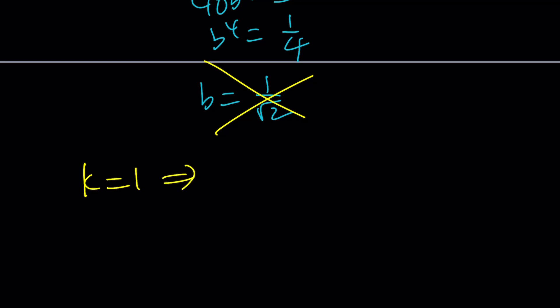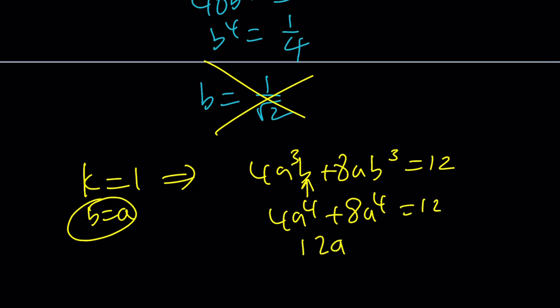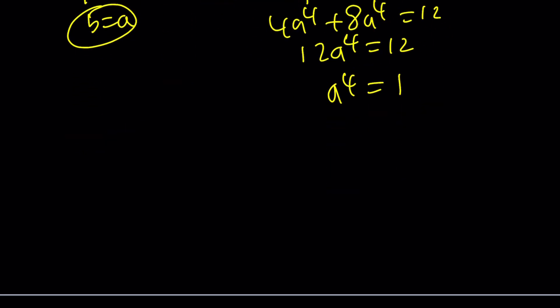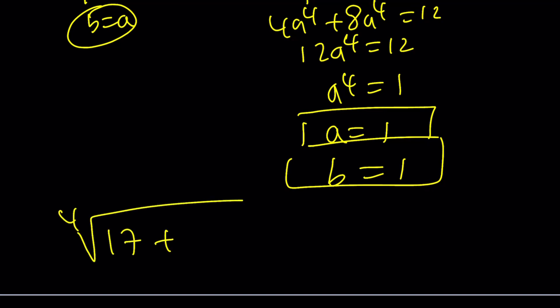If k is equal to 1, then my equation was 4a cubed b plus 8ab cubed equals 12. Replace b with a because that's what it means. So you're going to get 4a to the 4th plus 8a to the 4th equals 12, which means 12a to the 4th equals 12, which means a to the 4th equals 1. And from here, you get two solutions, but we're going to go with the positive solution, a equals 1 is going to be the solution. Since a and b are equal, b is also going to be 1, which means our expression, the 4th root of 17 plus 12 root 2 can be written as 1 plus root 2. And if you don't believe that, you can definitely raise it to the 4th power and check it out.